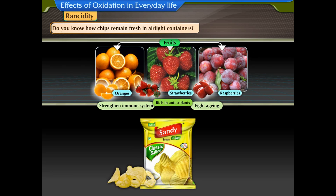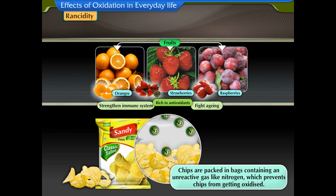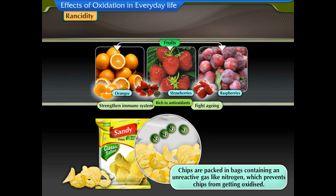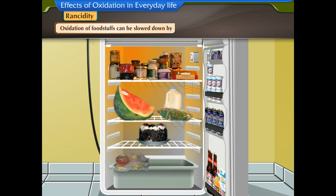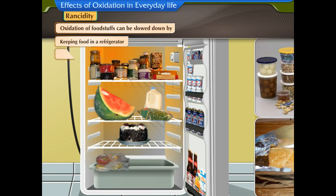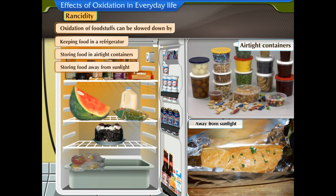Do you know how chips remain fresh in airtight containers? Chips are packed in bags containing an unreactive gas like nitrogen, which prevents chips from getting oxidized. Oxidation of foodstuffs can be slowed down by keeping food in a refrigerator, storing food in airtight containers, or storing foods away from sunlight.